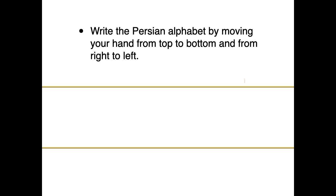In order to write the Persian alphabet, you need to move your hand from top to bottom and from right to left. Let's see the way that the letters appear on the screen.